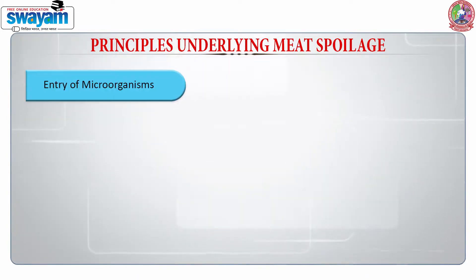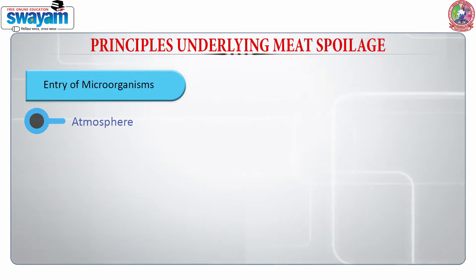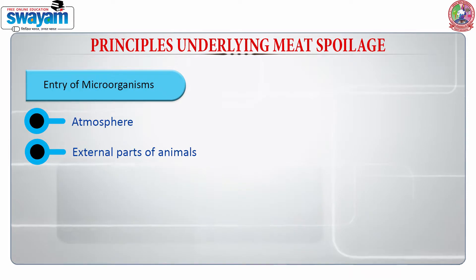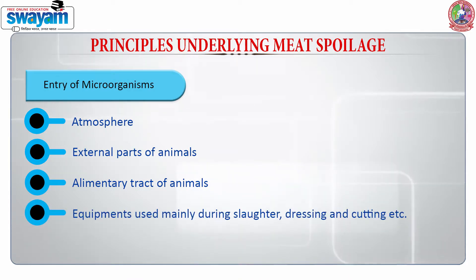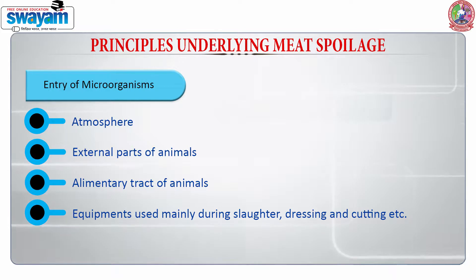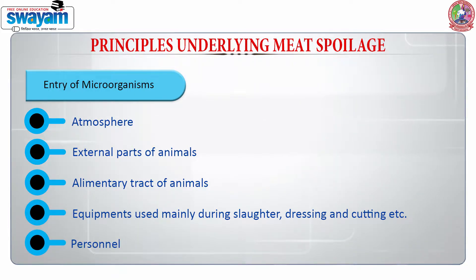When we talk about spoilage, and in particular the meat spoilage, we deal with the entry of microorganisms. From where do they come? First, the atmosphere. They also come from the external parts of animals and from the alimentary tract of animals. We are also talking about the equipment which is used during the slaughter, dressing and cutting. Even the handlers — the workers who are handling the meat — they also act as a source of contamination.